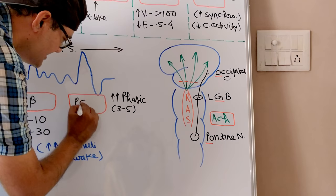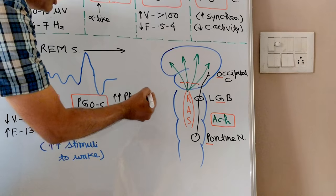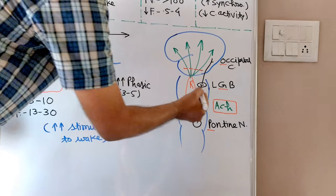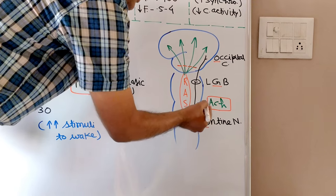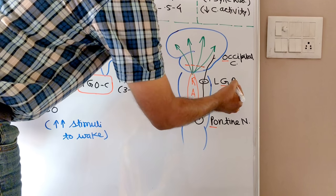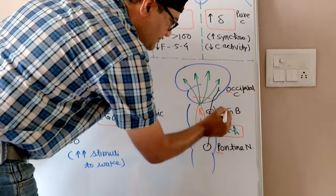PGO complexes are also recorded which are high phasic waves in groups of 3 to 5. These are due to cholinergic discharges starting from pontine nucleus, rapidly going to lateral geniculate body, and finally reaching to occipital cortex - P, G, O.